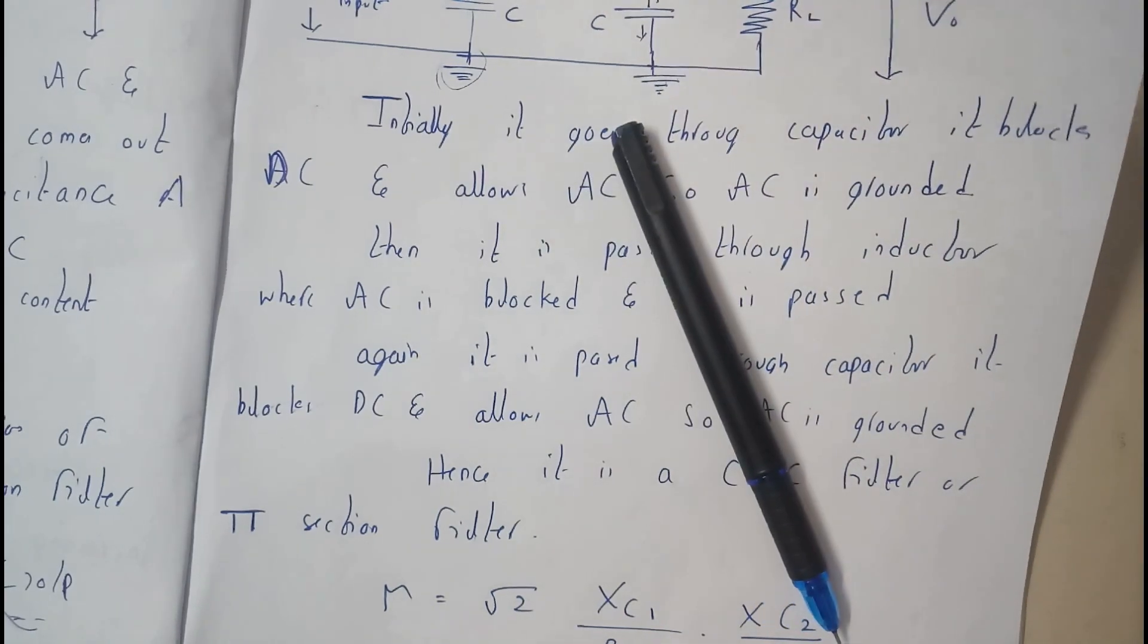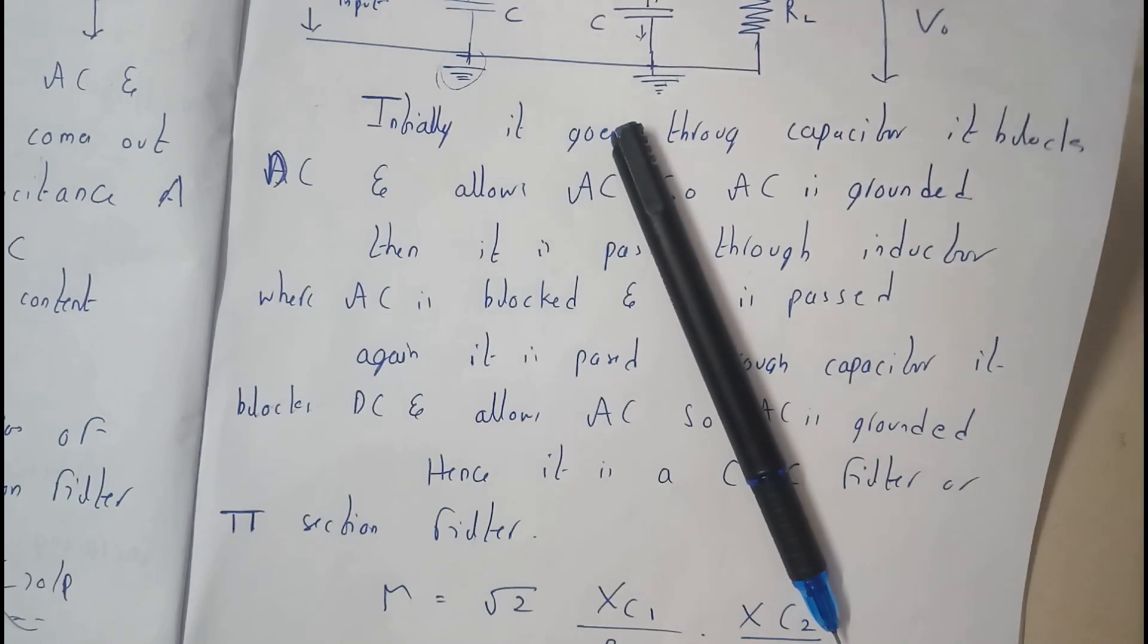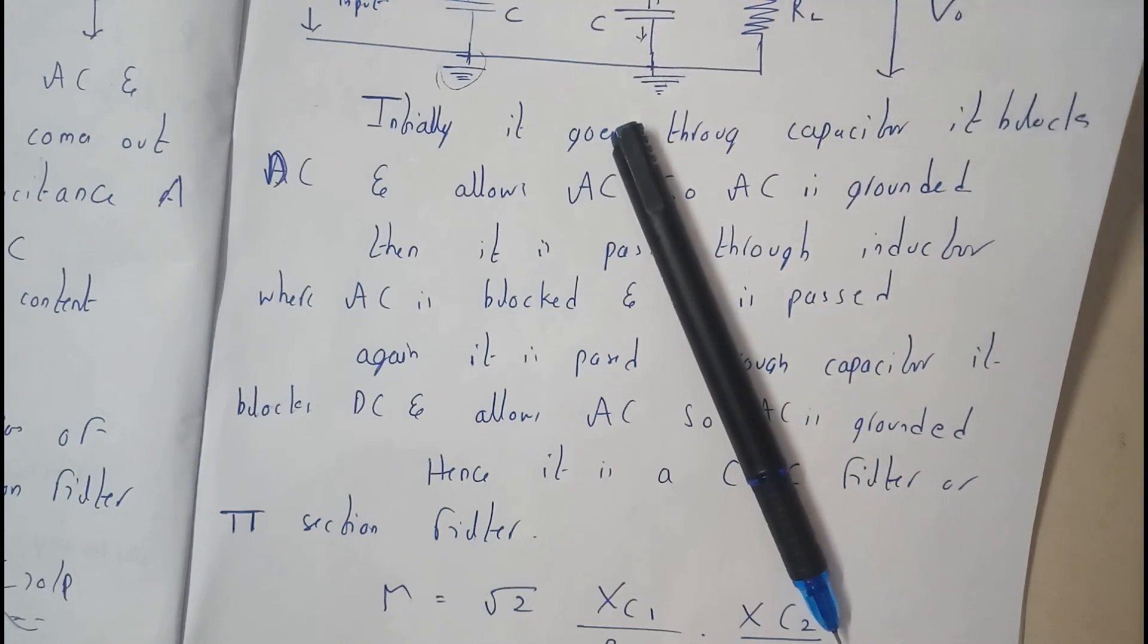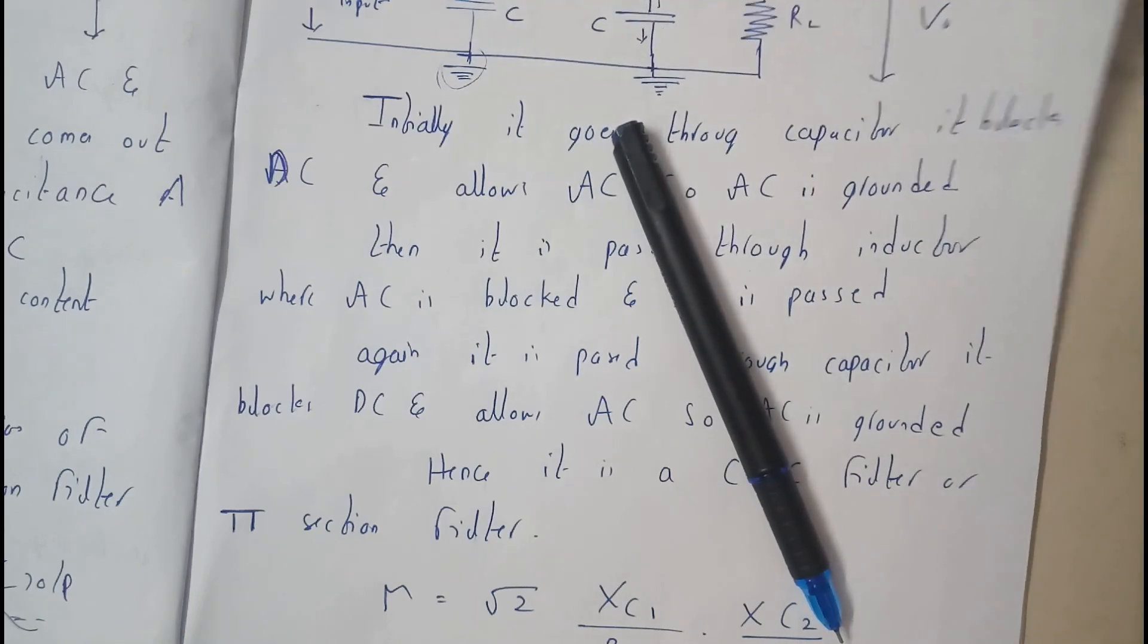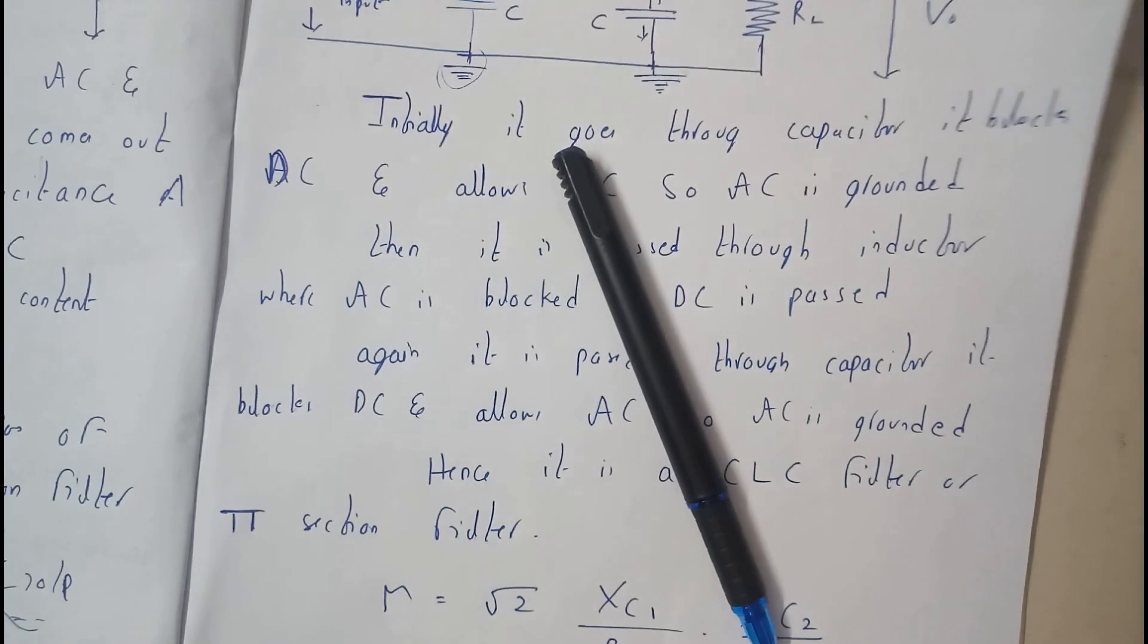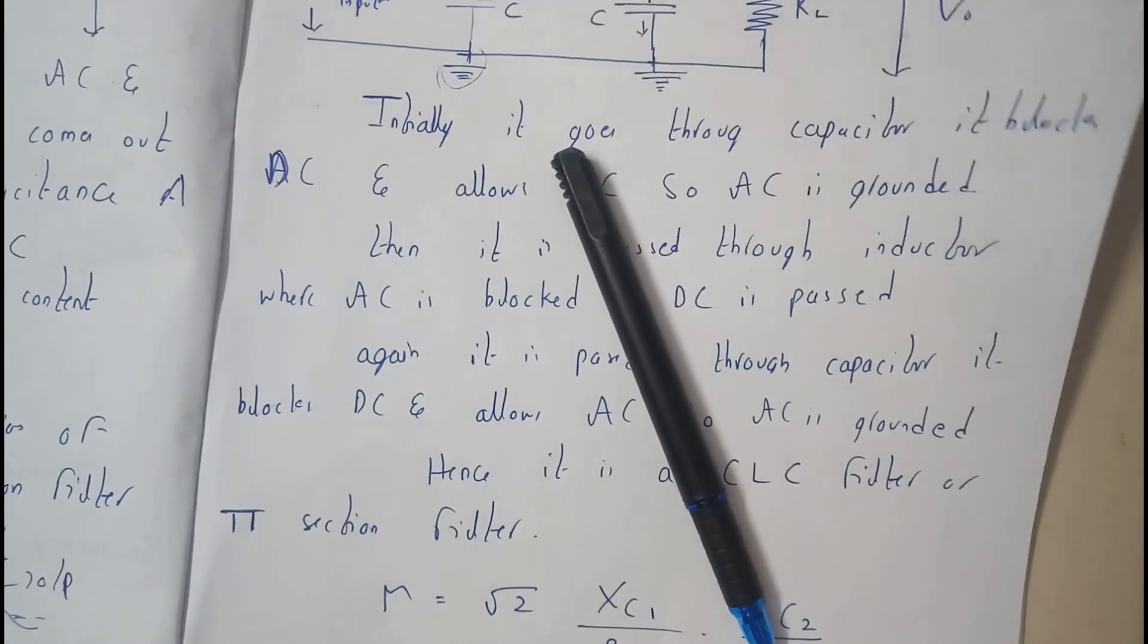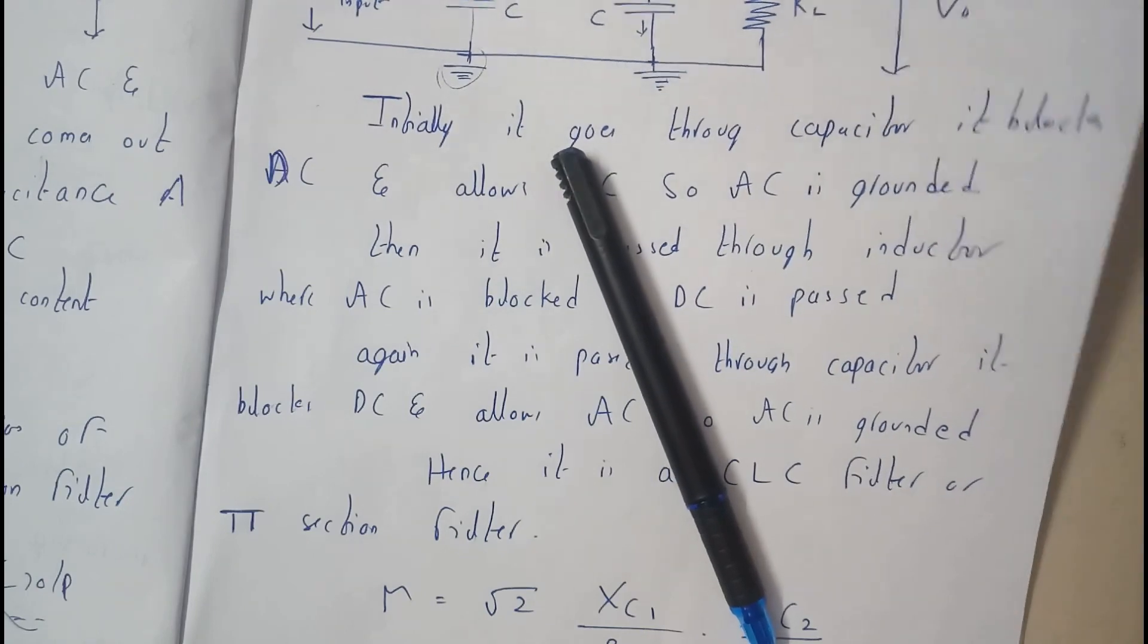The maximum amount possible will be removed in this condition. Even after this, we are not going to get the exact output, that is our DC supply. For that, we need to have a regulator.